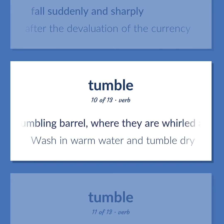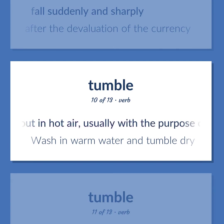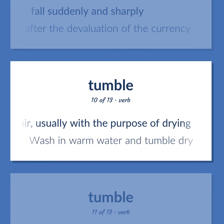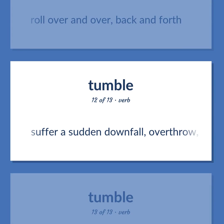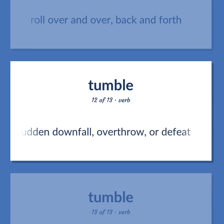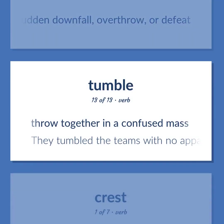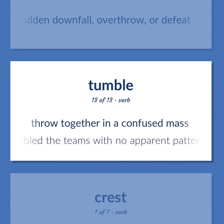Put clothes in a tumbling barrel where they are whirled about in hot air, usually with the purpose of drying — wash in warm water and tumble dry. Roll over and over, back and forth. Suffer a sudden downfall, overthrow, or defeat. Throw together in a confused mass — they tumbled the teams with no apparent pattern.